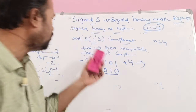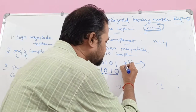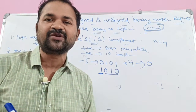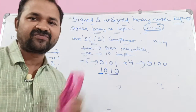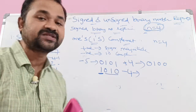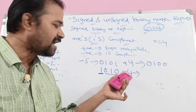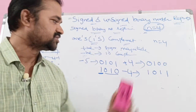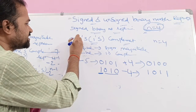For +4 in one's complement notation: +4 is a positive number, so we use sign magnitude representation. Sign bit is 0, and 4 in binary is 100, giving 0100. For −4: it is negative, so we use one's complement. Starting from +4 = 0100, converting 0s to 1s and 1s to 0s gives 1011. So −4 in one's complement notation is 1011.